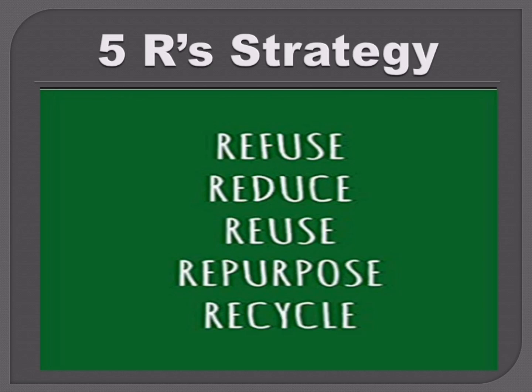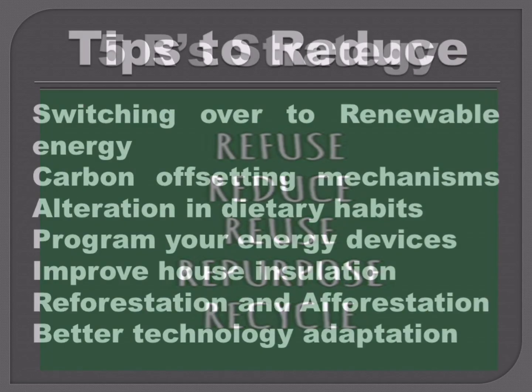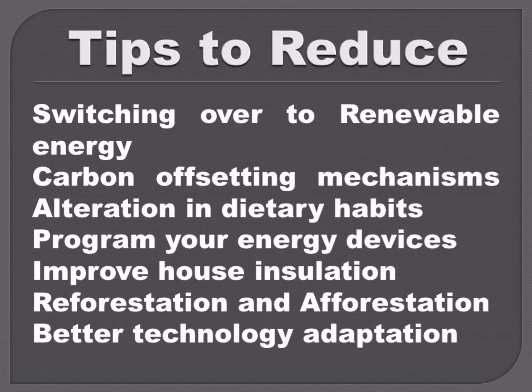The most common way to reduce the carbon footprint of humans is to adopt the 5R strategy, which stands for Reduce, Reuse, Recycle, Repurpose, and Refuse. Refuse what you do not need, reduce what you need, reuse it as many times as you can, repurpose the product if you are not using it anymore, and recycle it so that something reaches the end of its life cycle.